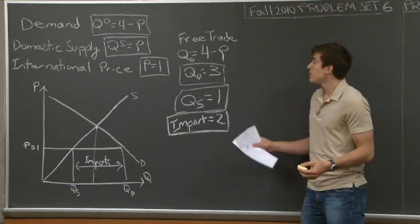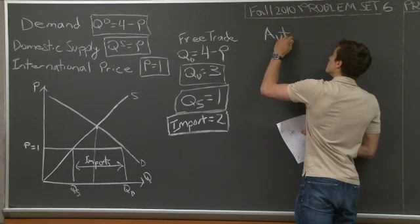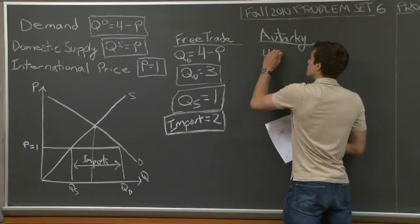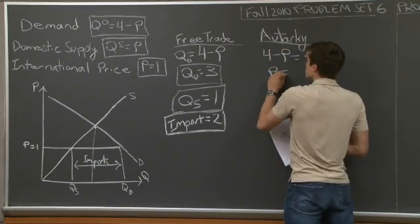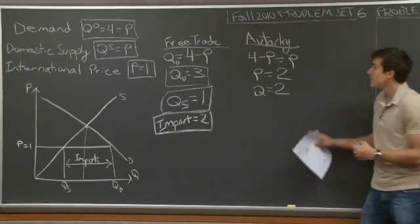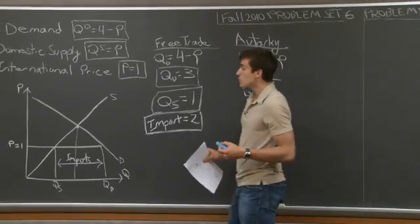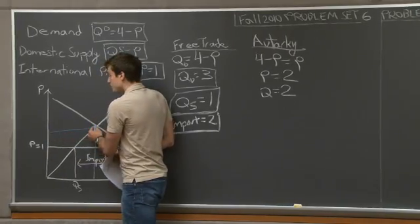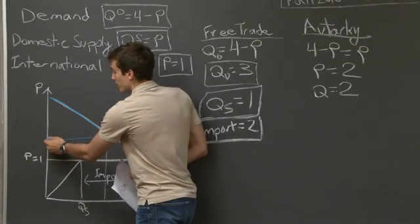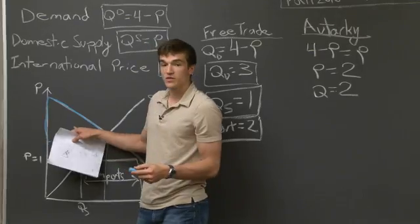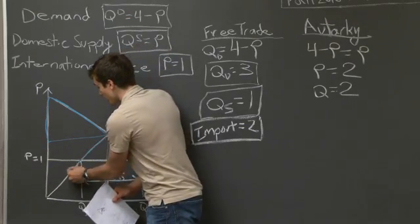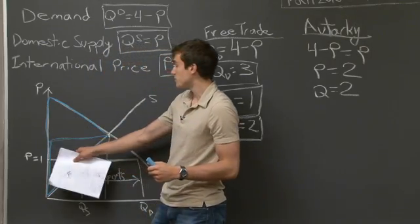Compared to the autarky scenario, what we had is we would have set quantity demanded equal to quantity supplied, and we would have found that the price would be equal to 2, and the quantity supplied would also be equal to 2. We can represent this on the graph: in autarky, the consumer surplus is the space below the demand curve up to the equilibrium price of 2, and the producer surplus is a triangle above the supply curve up to that price. The total surplus in autarky is this combined area.